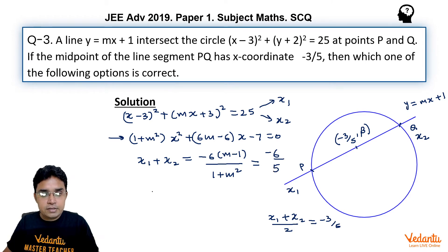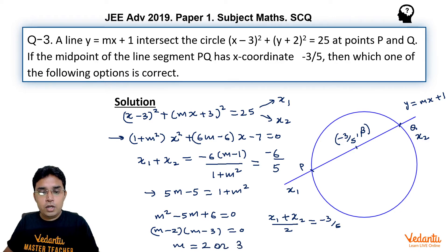Now minus 6 will get cancelled and we get after cross multiplication 5m minus 5 equals 1 plus m square, or m square minus 5m plus 6 equals 0. Now this is very easy to factorize: (m minus 2) is one factor, (m minus 3) is another factor. So the answer for this question is m equals either 2 or equal to 3.